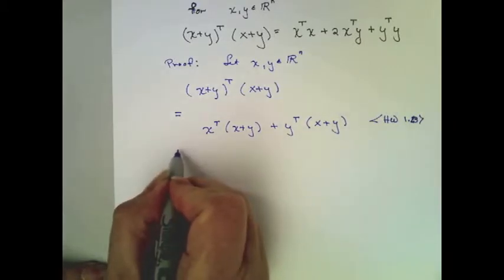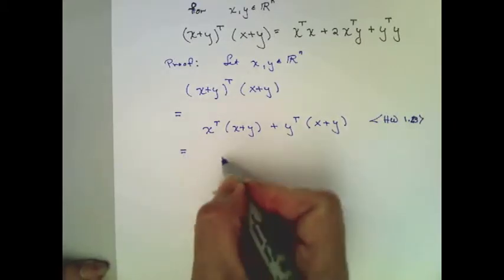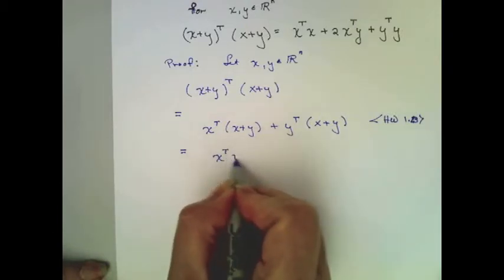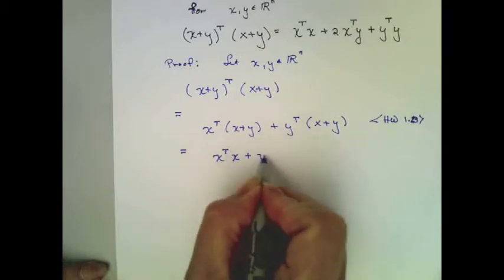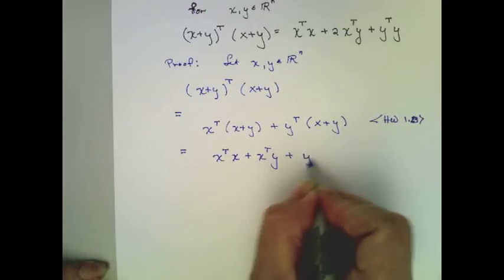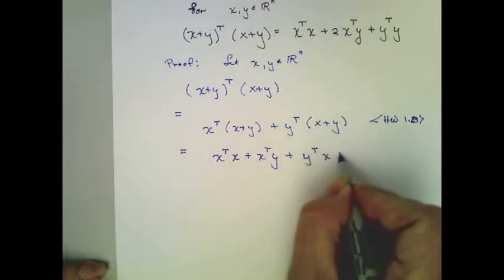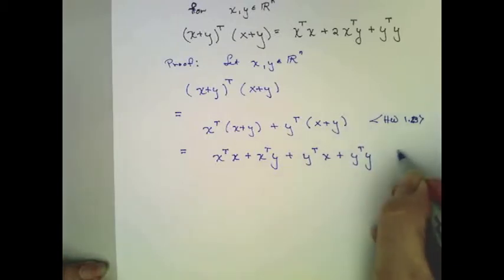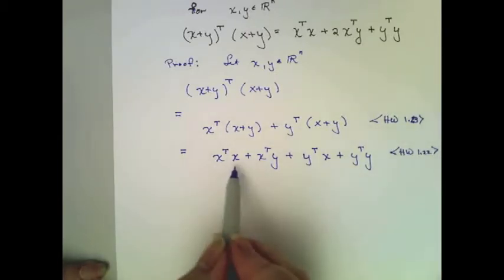But this is equal to x transpose times x plus x transpose times y plus y transpose times x plus y transpose times y, by the previous homework, because dot product and addition are distributive.